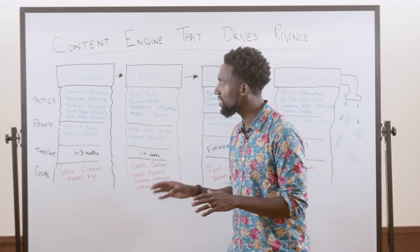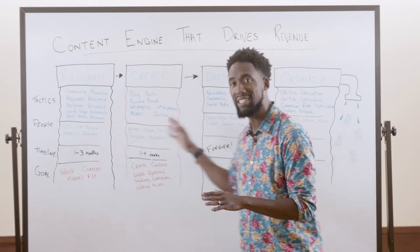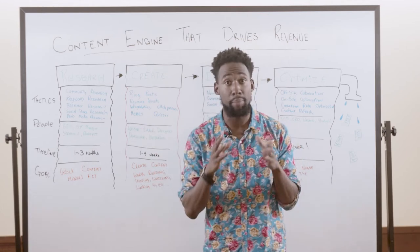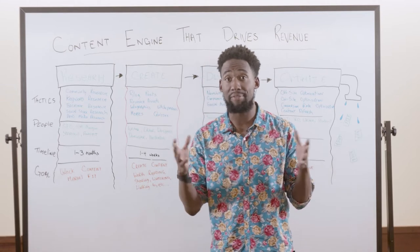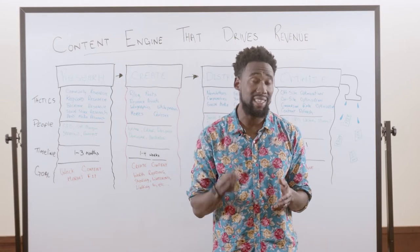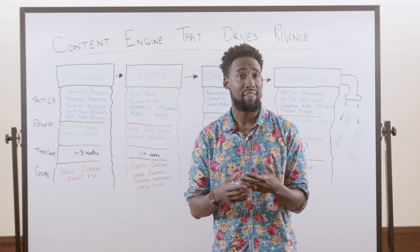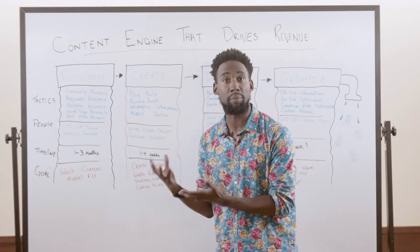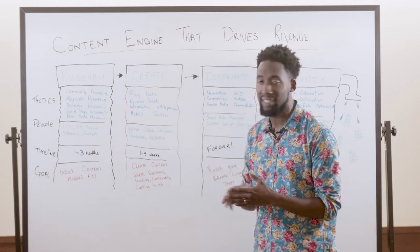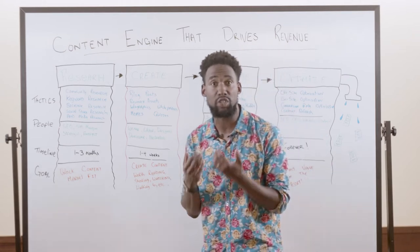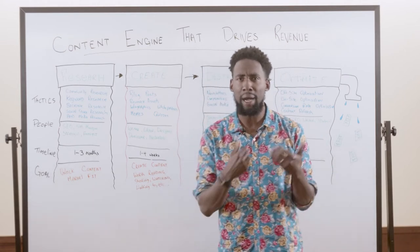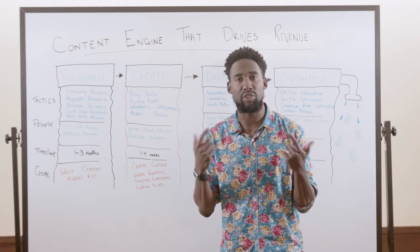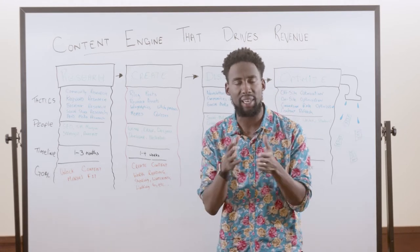The first step is research. There are essentially tactics, people, timeline, and goals applicable to each category. When it comes to research, the tactics you want to embrace upfront are rooted in community research — going to find the communities your audience is spending time in online, understanding the trends and types of content they're consuming, and the problems they're talking about regularly. You're looking for qualitative insight to understand the problems of the audience you're trying to reach. Then you'll do keyword research, understanding the search intent behind the words your audience types into Google to find information and solve problems.